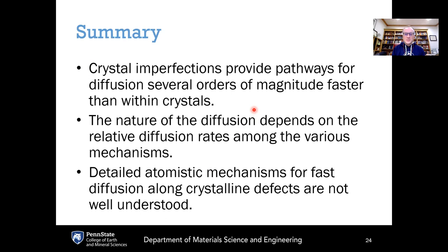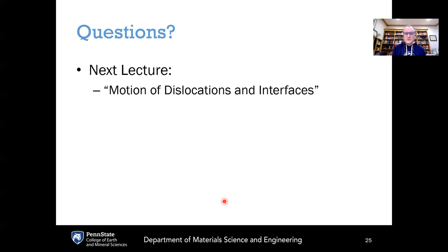To summarize this chapter: crystal imperfections provide pathways for diffusion several orders of magnitude faster than within the crystals themselves. The nature of the diffusion depends on the relative diffusion rates among the various mechanisms. Unfortunately, the detailed atomic mechanisms for fast diffusion along these crystal defects are not well understood, and there is no universal behavior. Next time, in the next chapter, we're going to deal with motion of dislocations and interfaces. Thank you very much, and I'll see you next time.